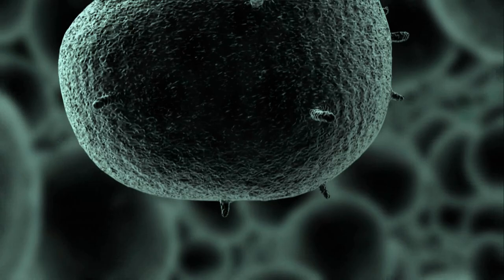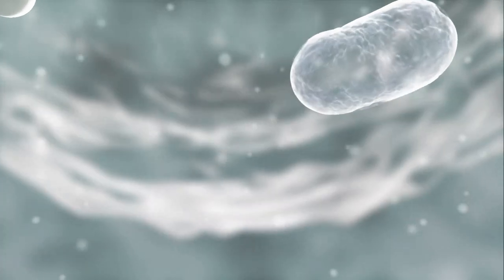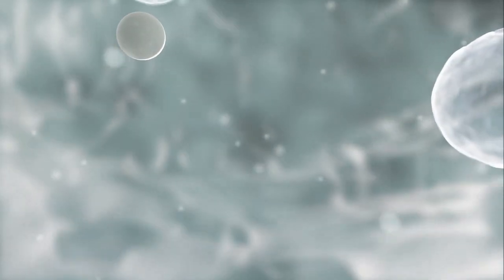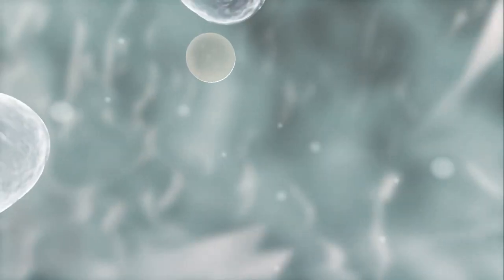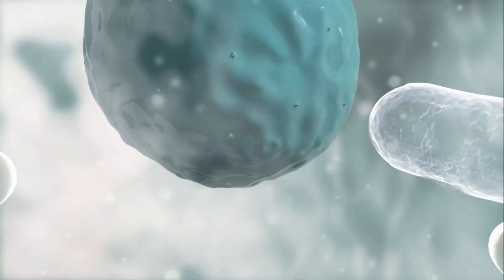All cells have the same structural makeup. They are surrounded by a membrane and contain a substance known as cytoplasm, in which various elements, including a nucleus, are suspended.